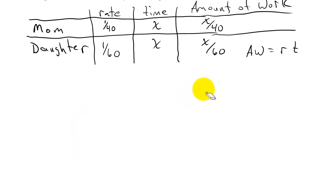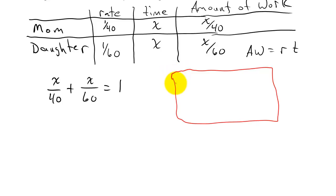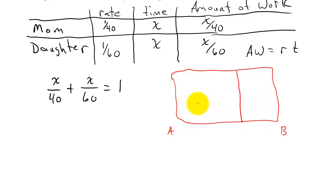Our equation is: the amount of work mom did, x over 40, plus the amount of work the daughter did, x over 60, equals 1. To explain why this equals 1: imagine two people mowing a yard — person A starts on one side, person B on the other, and they meet in the middle. Person A might mow 70% of the yard, person B the remaining 30%.